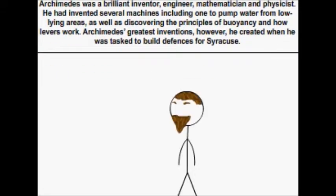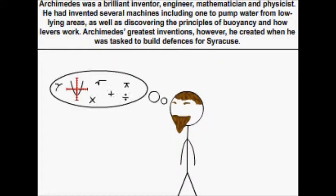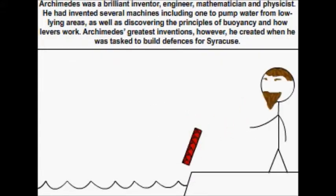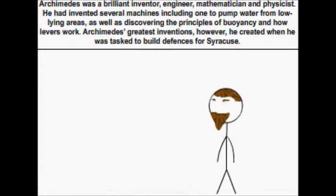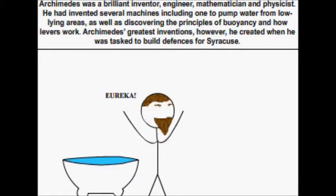Archimedes was a brilliant inventor, engineer, mathematician and physicist. He had invented several machines, including one to pump water from low-lying areas, as well as discovering the principles of buoyancy and how levers work.